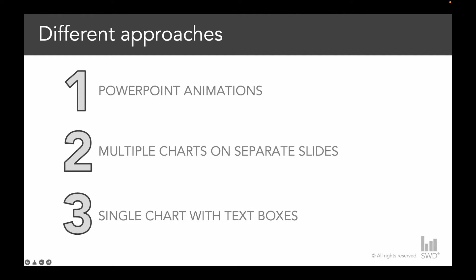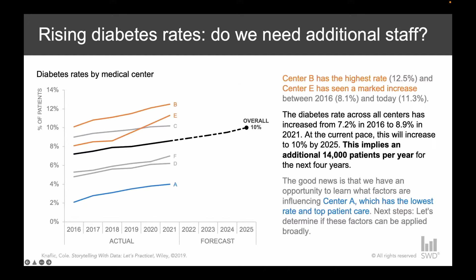Let's move on to an example we'll use to explain each of these animation approaches. This is a chart taken from the Storytelling with Data Let's Practice book — you can find it under exercise 7.5. I'll also link to this in the show notes below so you'll have it for reference later.